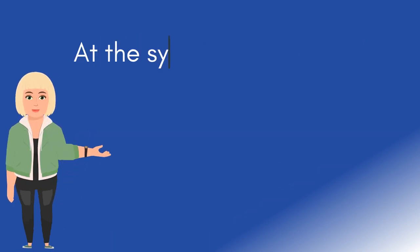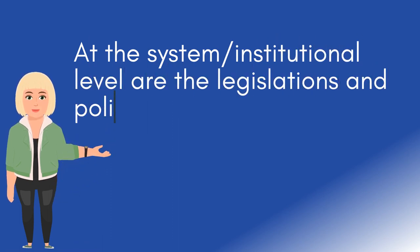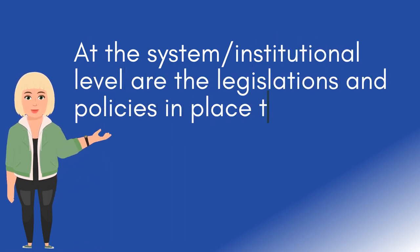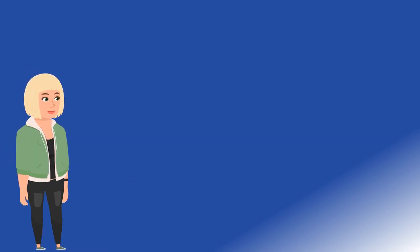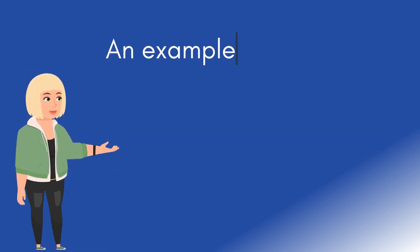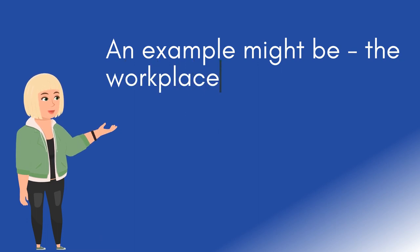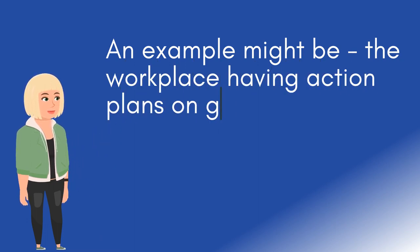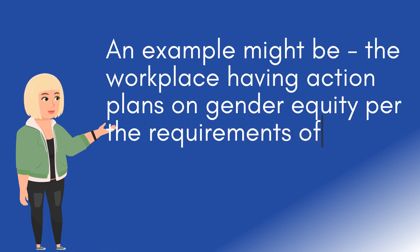At the system and institutional level are the legislations and policies in place that address, or do not address, a gender imbalance. An example might be the workplace having action plans on gender equity per the requirements of the Gender Equality Act.